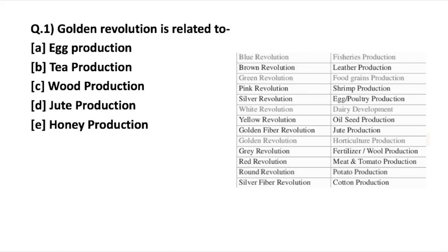Let's begin with the first question. Golden revolution is related to — now there are different types of revolutions and you must know each one. They are not difficult to remember and are very important for the examination. Golden revolution is related to honey production, horticulture production, or fruits production. You might be confused between golden revolution and golden fiber revolution — they are different. Golden fiber revolution is related to jute production, while golden revolution covers honey, horticulture, and fruit production.